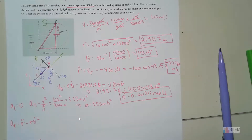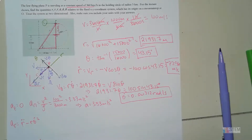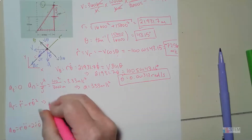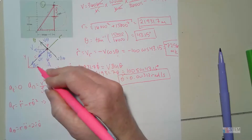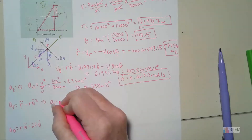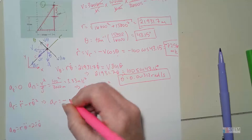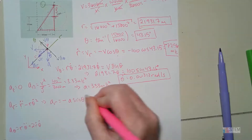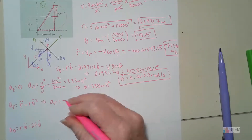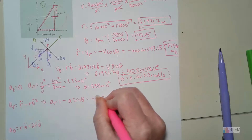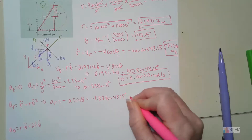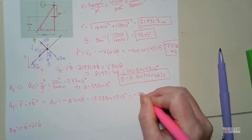Now I use this acceleration to find the two polar components, similar to what we did with velocity. Starting with aᵣ: from the diagram, this component is in the negative r direction and equals −a sinθ. Plugging in: aᵣ = −3.33 sin(43.15°) = −2.277 m/s².